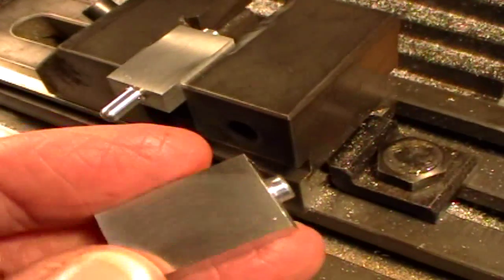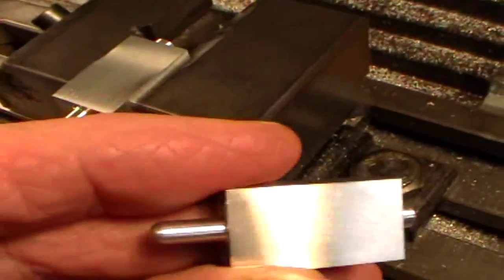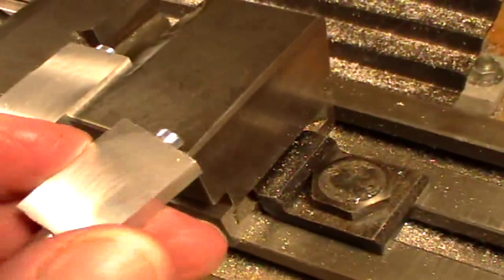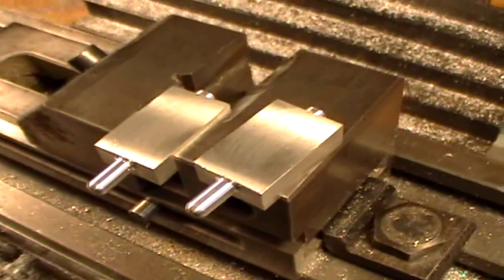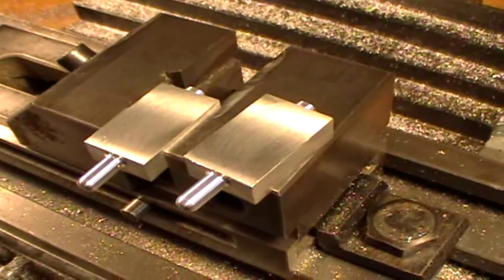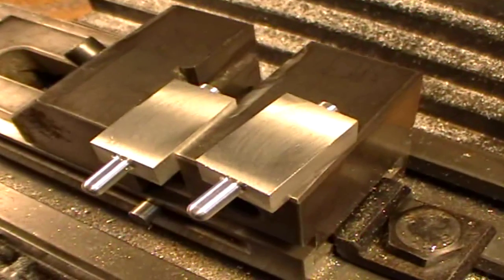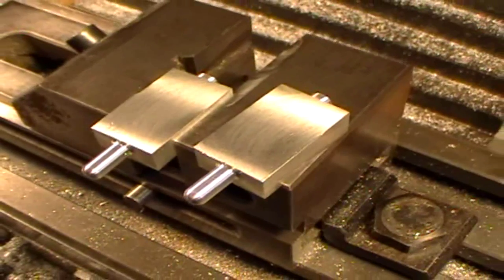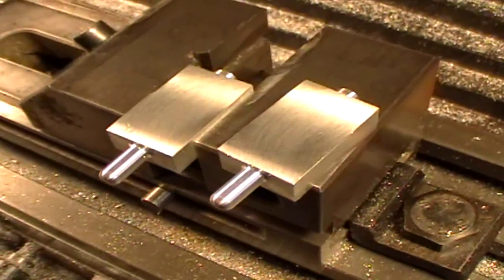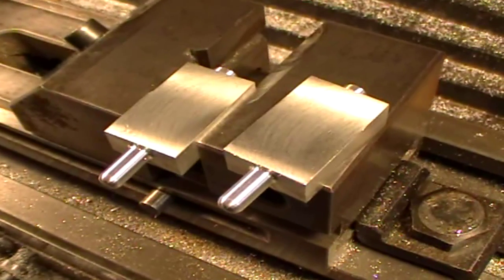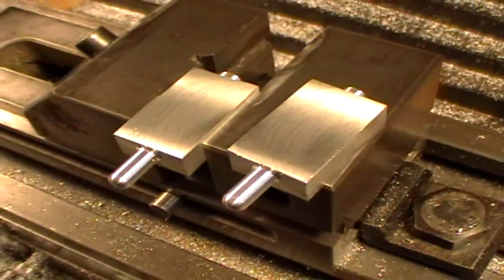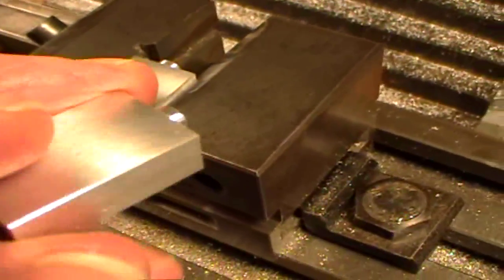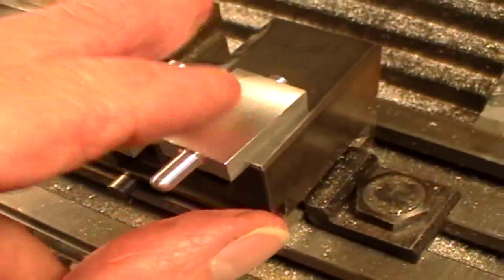These are the steam chest blanks. One is in the vice all done except for the inside milling. The holes are drilled, this end is reamed, so we're all ready now to drill the mounting holes in the corners and mill out the inside. When we've done that we've got the steam boxes and then we have to do the cover. These have already been fly cut and they are precisely the same thickness.